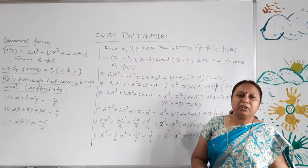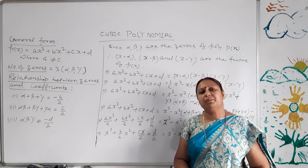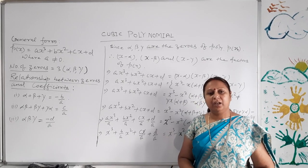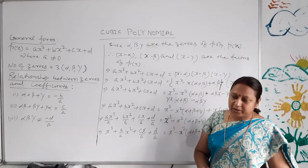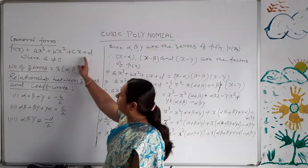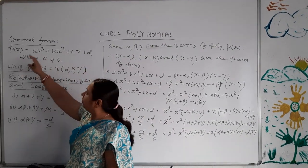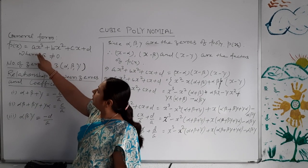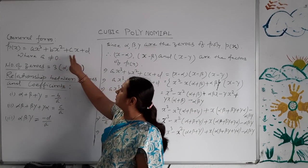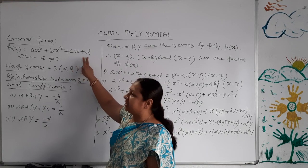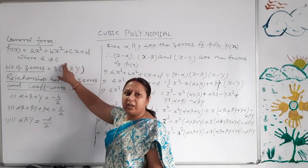A cubic polynomial is a polynomial in which the maximum power of the variable is 3. It means the degree of the polynomial is 3. The general form of a cubic polynomial is ax³ + bx² + cx + d, where a is not equal to 0.